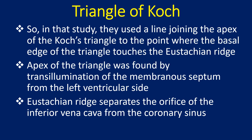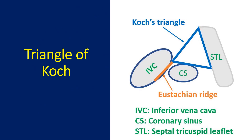The apex of the triangle was found by transillumination of the membranous septum from the left ventricular side. The eustachian ridge separates the orifice of the inferior vena cava from the coronary sinus. This is a highly diagrammatic representation of the landmarks used to identify the Triangle of Koch. The boundary from the apex to the eustachian ridge marks the location of the tendon of Todaro, seen histologically in the adult and macroscopically in the fetus and infant.